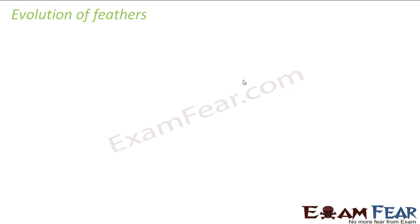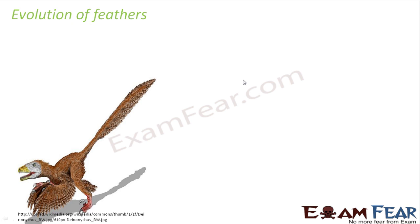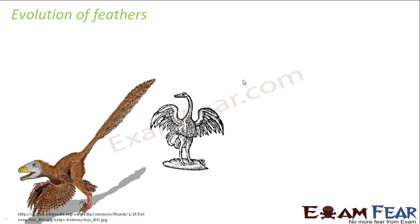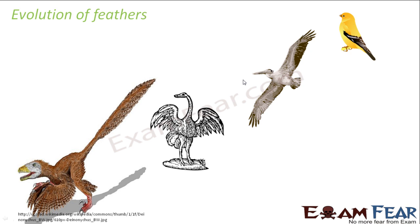Let us talk about feathers. Feathers were something which evolved in the period of the dinosaurs — such a long, long time ago. At that time, the dinosaurs were feathered only for the purpose of insulation. For locomotion, it was not at all used. When it was too cold, the feathers provided them warmth — that was the purpose of the feathers. But later, the same feathers were adopted by the birds and actually helped them in flight. So evolution everywhere takes place in the same way.